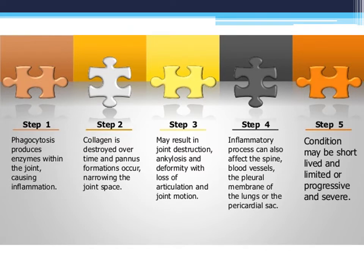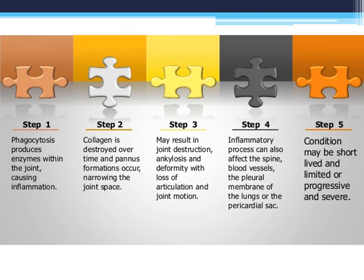In the fourth step, the inflammatory process can affect the spine, the spinal cord, blood vessels, the pleural membrane, the lungs, and the pericardial sacs. In the last stage, the condition may be short but limited and progressive and severe. Initially the person will have mild joint pain progressing to severe joint pain, which continues for the chronic period. It may be progressive — starting slower and gradually increasing — or it may be sudden and immediately severe.